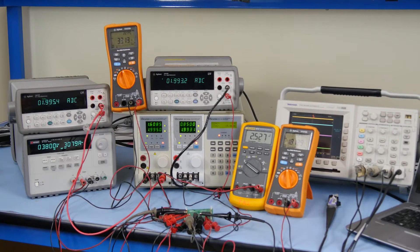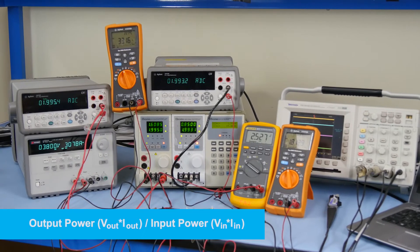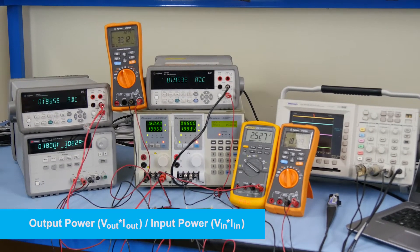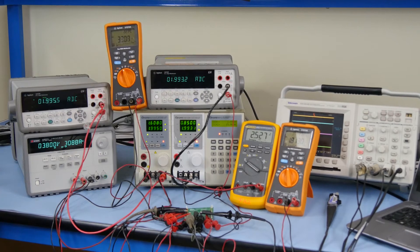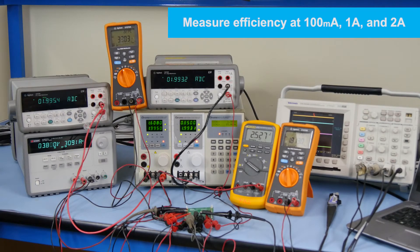We need to have enough data points to plot efficiency curves. Efficiency is a function of output power, Vout times Iout, over input power, VIN times IIN. As an example, we are going to measure efficiency at 100mA, 1A, and then 2A loads.